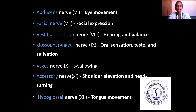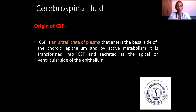The vagus nerve deals with salivation. The accessory nerve deals with shoulder elevation and head turning. The hypoglossal nerve deals with tongue movements.